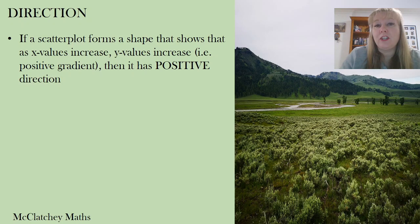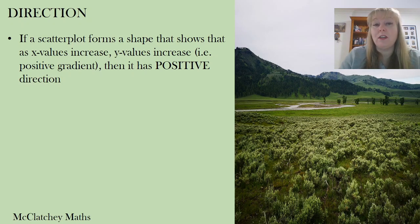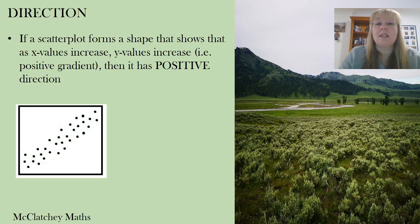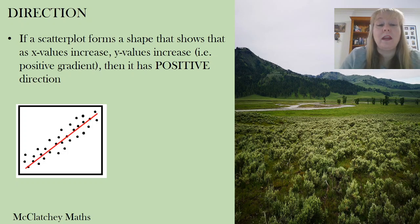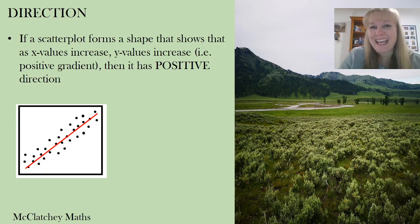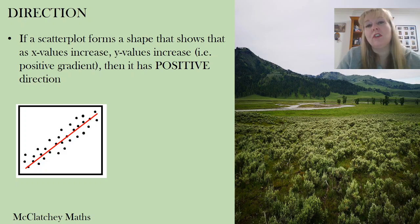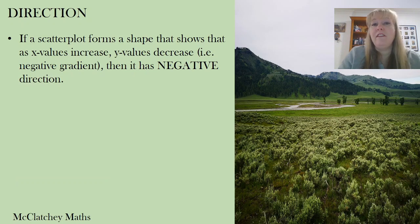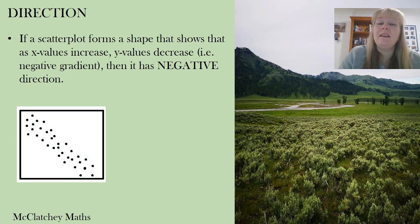The next characteristic is direction. If a scatter plot shows that as the x-values increase, the y-values are also increasing — in other words it has positive gradient — then we say it has a positive direction. On the other hand, if as the x-values increase the y-values decrease, that's called negative gradient and would be a negative direction.